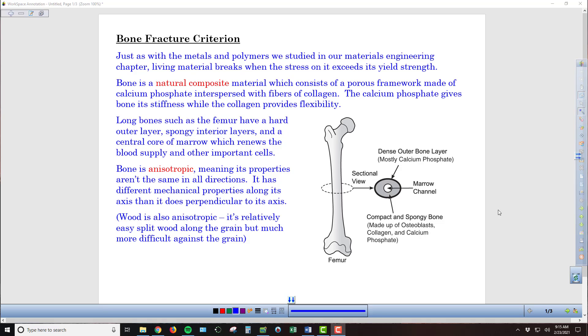Just like we did with metals and polymers in our materials chapter, we can study the material properties of organic materials, such as the bones in our body. So bone is a natural composite material, meaning that it has various properties and various elements to its construction.